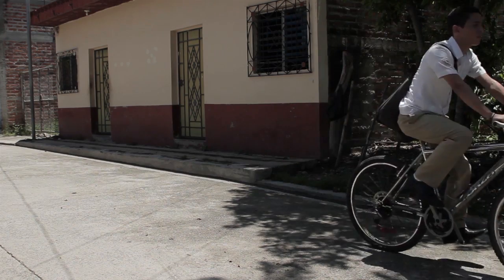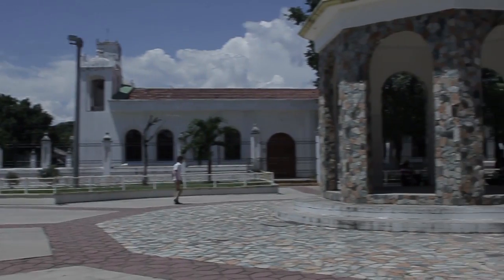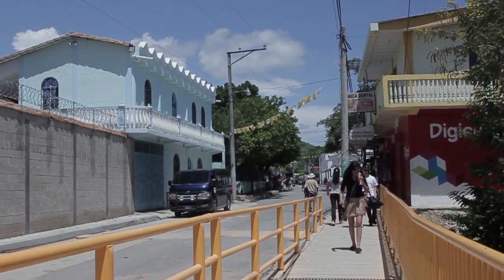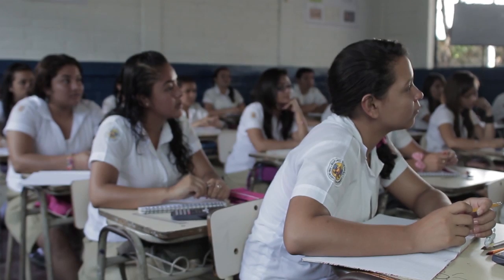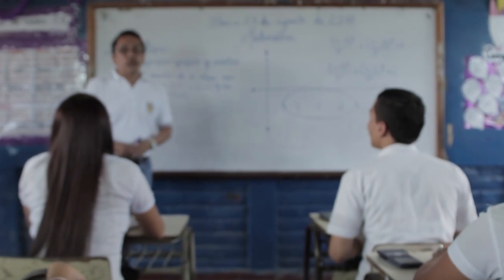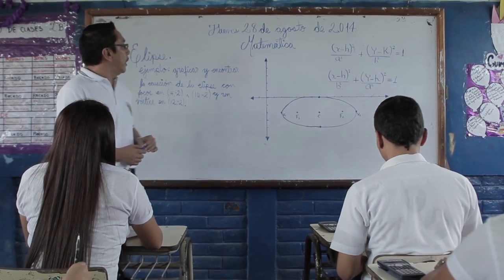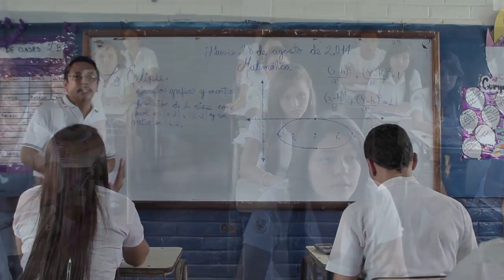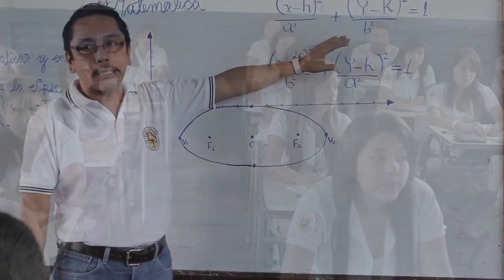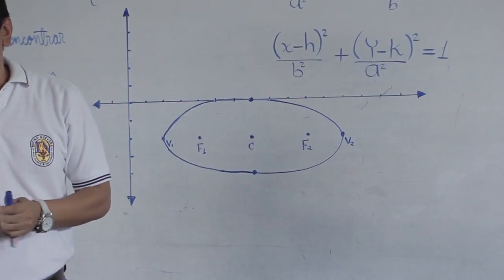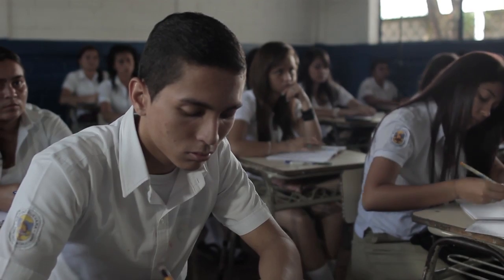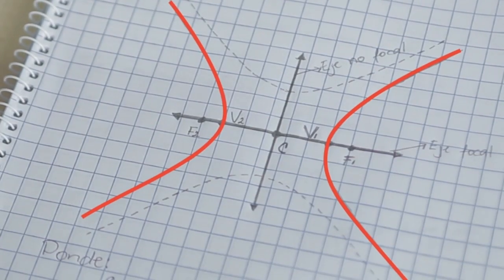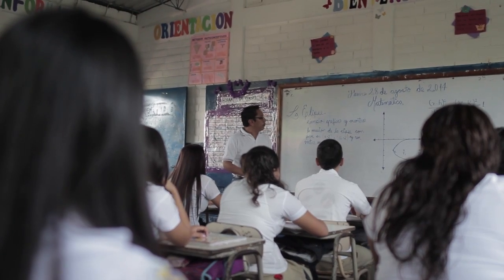En geometría existe un tipo de curvas planas llamadas cónicas, las cuales, conforme ha transcurrido el tiempo, se han convertido en una herramienta fundamental para describir y explicar algunos acontecimientos relacionados con la astronomía, la óptica, entre otras, los cuales se pueden apreciar en nuestro entorno.